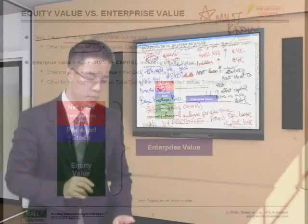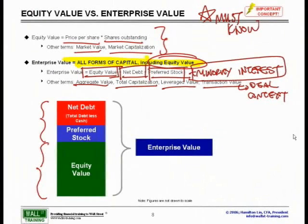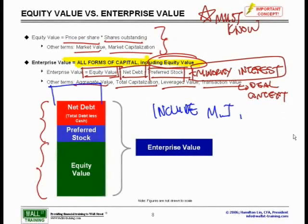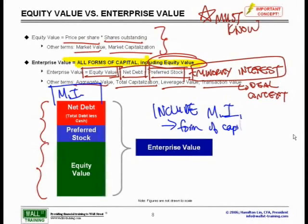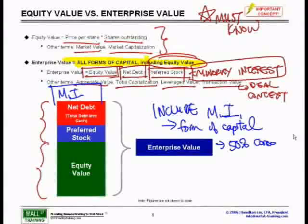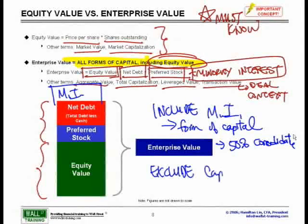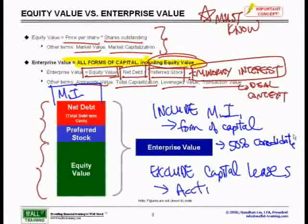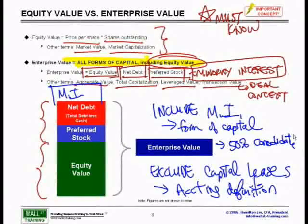Keeping this in the context of the enterprise value calculation, that is why we want to include minority interest — you can add another box for minority interest — because we want to include it as another form of capital used to get 100% of our profitability and balance sheet, since greater than 50% ownership requires consolidation. Likewise, we do not include capital leases because the difference between a capital and operating lease is purely an accounting definition, and this accounting definition does not impact our ability to fund the growth of our business through financing-related activities.